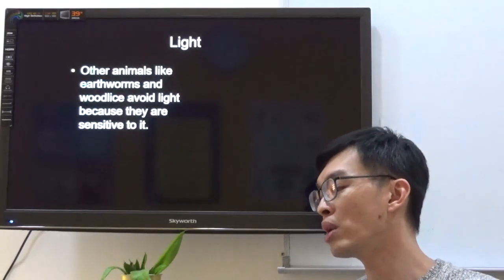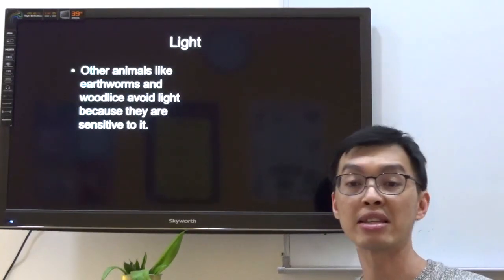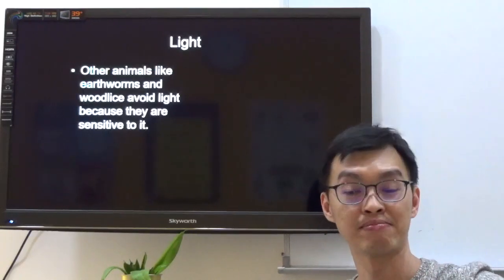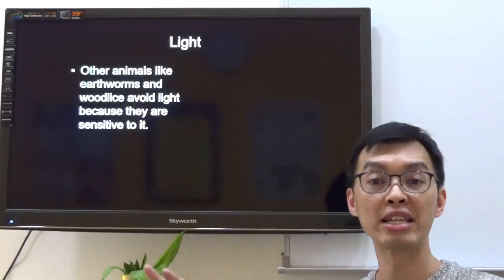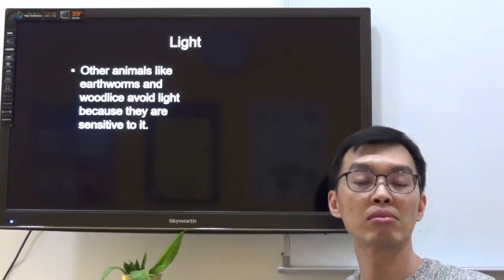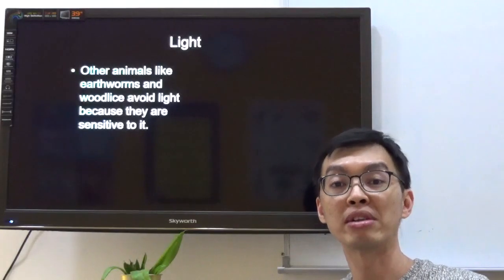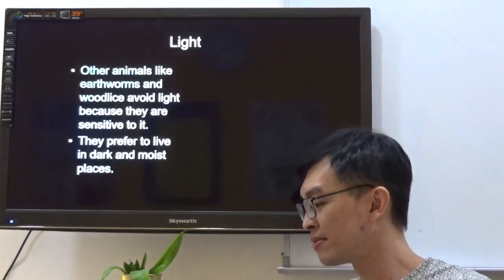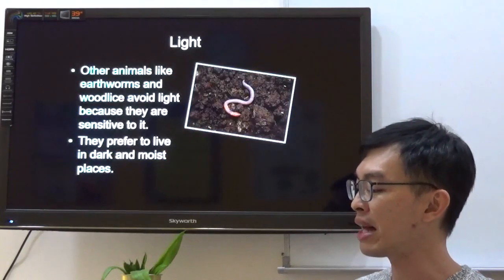Other animals like earthworms avoid light because they are sensitive to it. While one spectrum of the organisms prefer light, the other spectrum of organisms would prefer dark places. So, light. We also have to know about the different intensity of light. So, they prefer to live in dark and moist places.